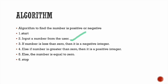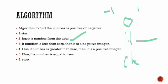If number is less than zero, the number is negative. Else if number is greater than zero, the number is positive. Otherwise, the number is equal to zero. Here minus one is a negative number, one is a positive number, and zero is neither positive nor negative. That means three conditions: if, else if, and else.